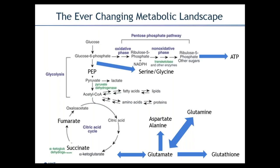We now know that glutamine plays a very important role in anaplerosis of the TCA, as well as a precursor for amino acid and glutathione synthesis. Glucose has been shown to play a role in de novo serine and glycine synthesis and is a known target for anti-cancer therapies. Pyruvate can also enter the TCA via pyruvate carboxylase, directly converting to oxaloacetate instead of acetyl-CoA, and oxaloacetate can be directly converted to PEP in cells other than hepatocytes.